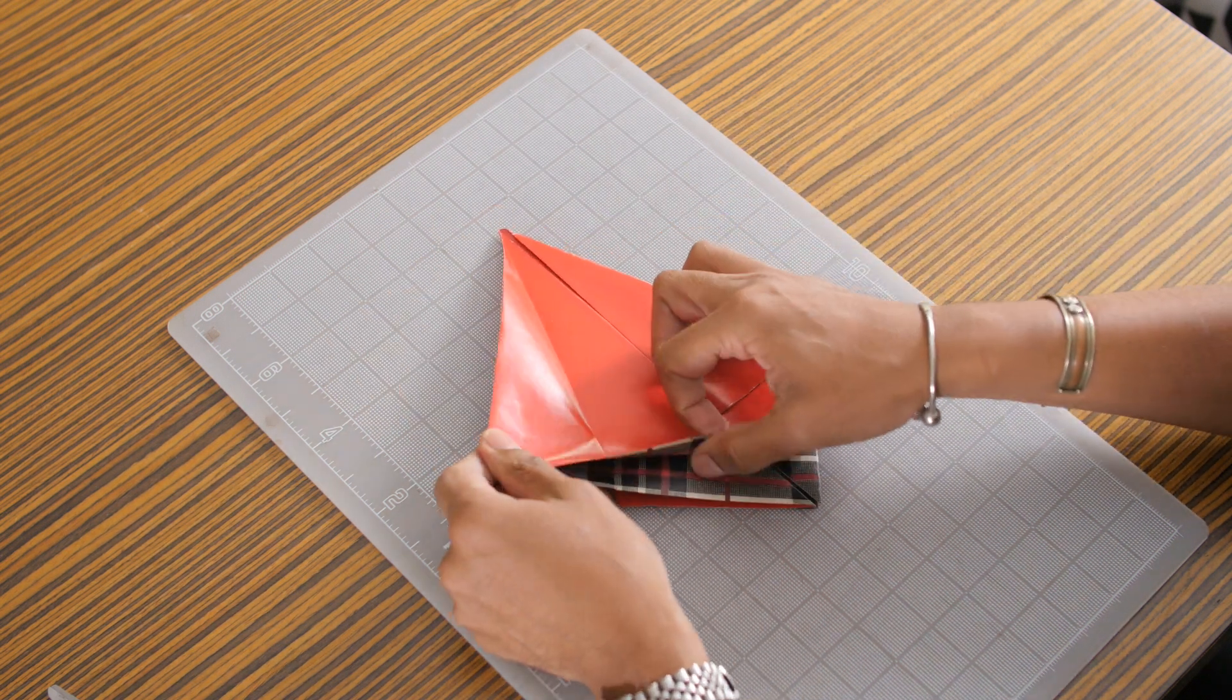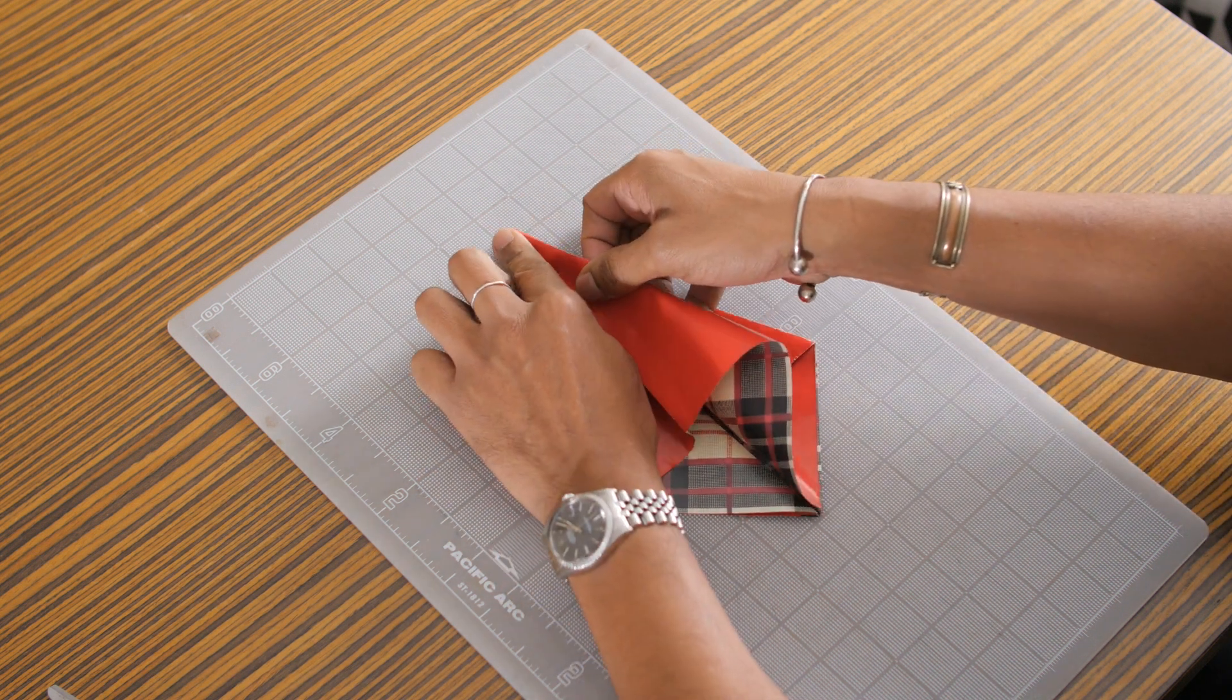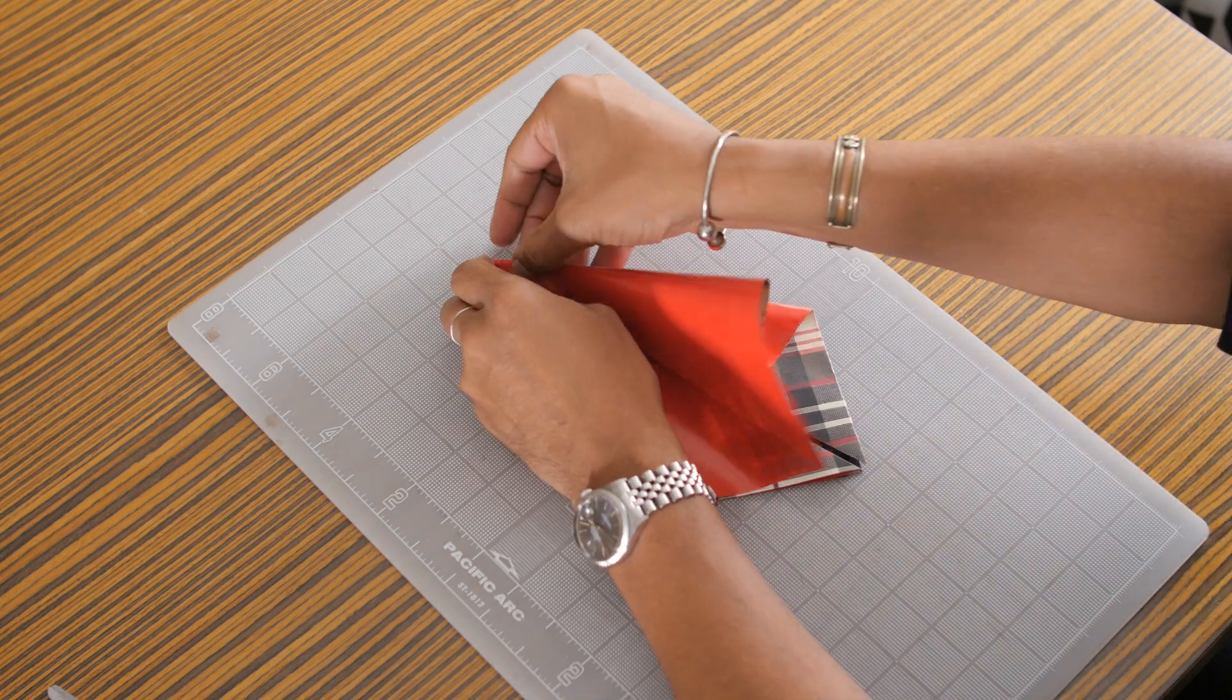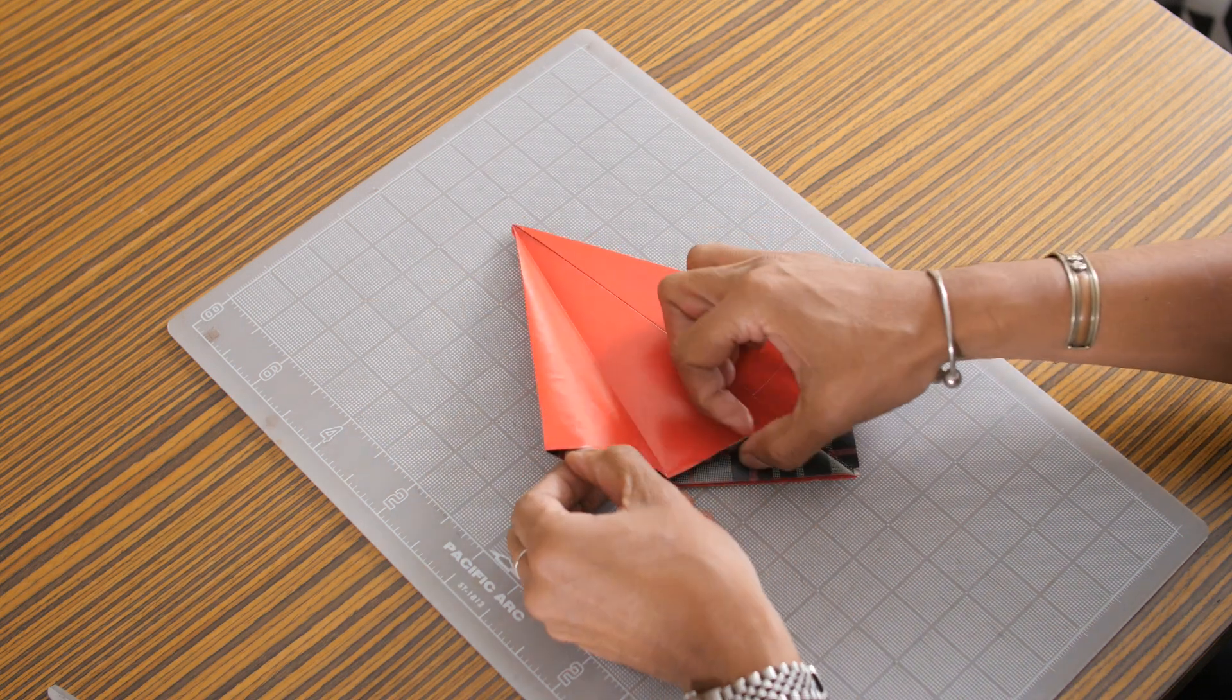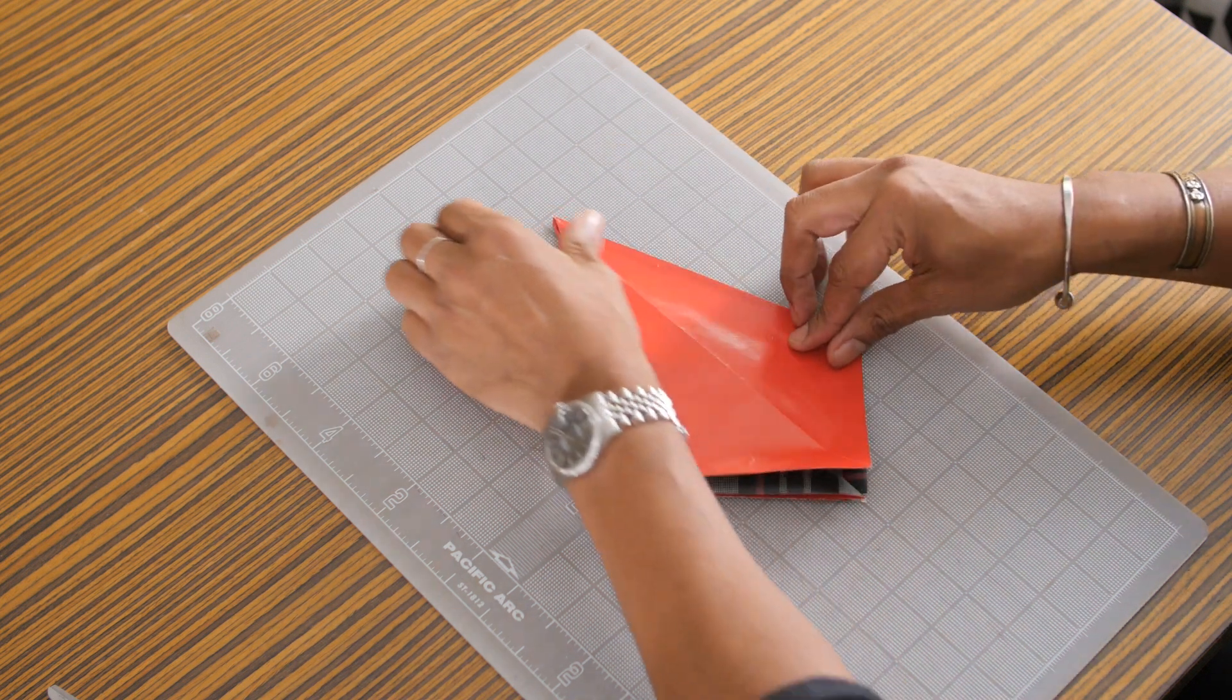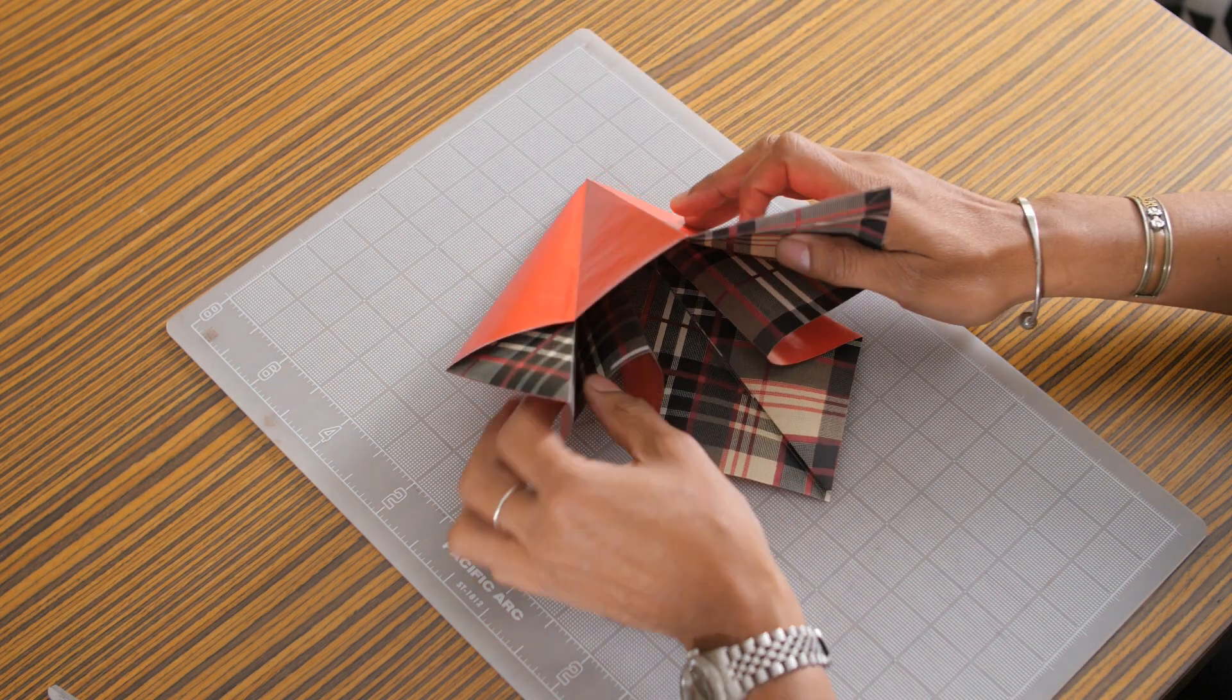Now we're going to do another set of inverse folds just like before. So open up the edge and tuck in. Do the same on the opposite side. And turn it over and you're going to do the same set of inverse folds on this side as well. Okay when you're done it should look like this on both sides. Open it up and you'll kind of see a bunch of folds. Just perfect.